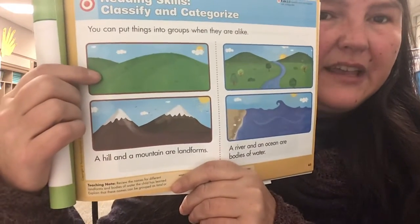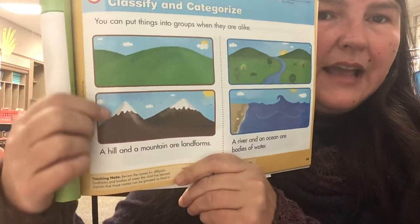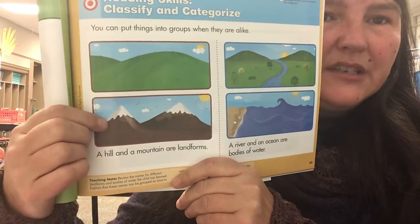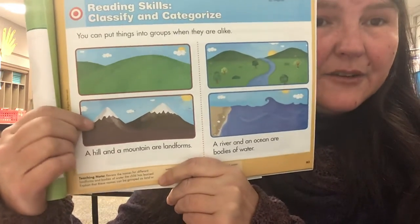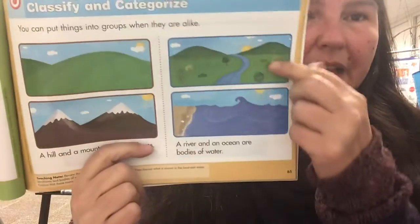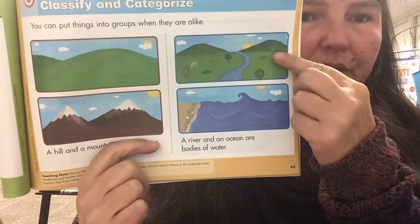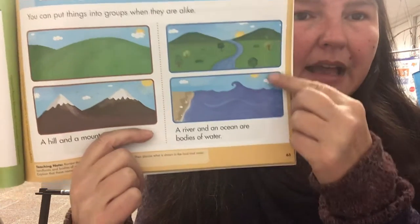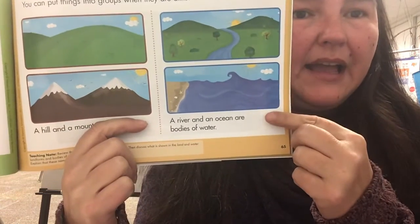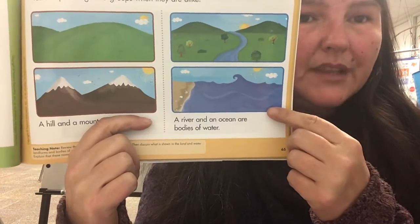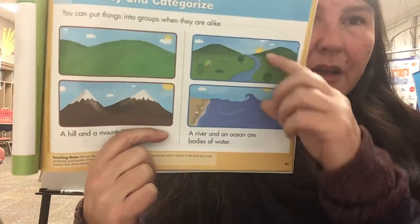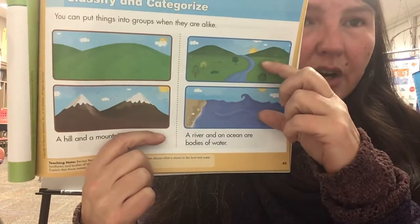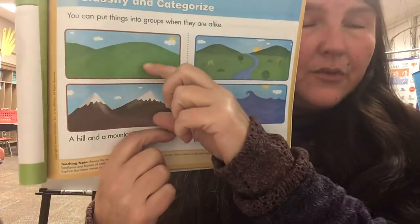We can put things that are alike into groups. So for example on this page, we have a hill and a mountain — those are land forms. Here we have a river and the ocean, and these are bodies of water. Bodies of water are somewhat alike, and land forms are alike.